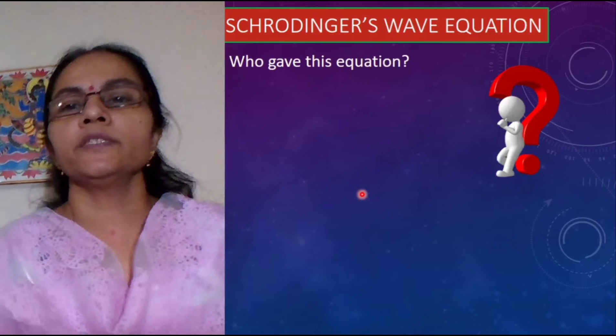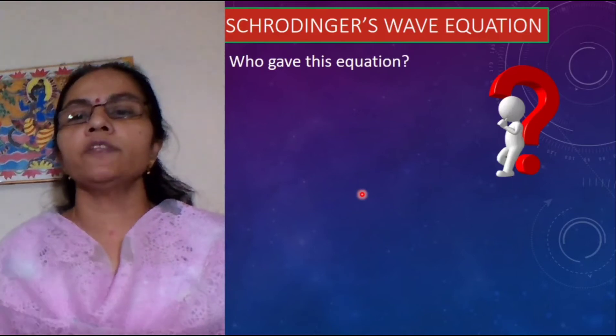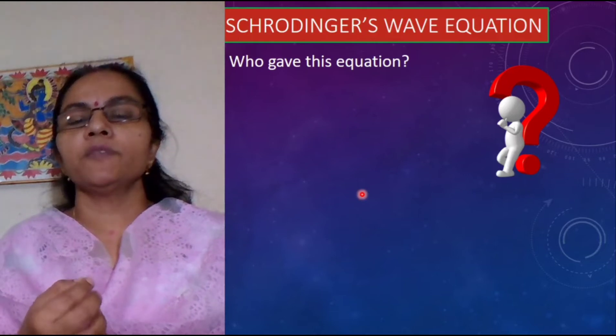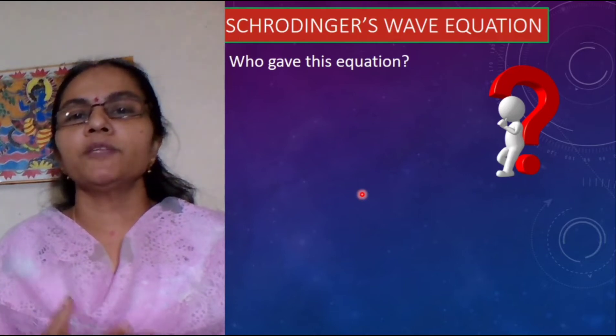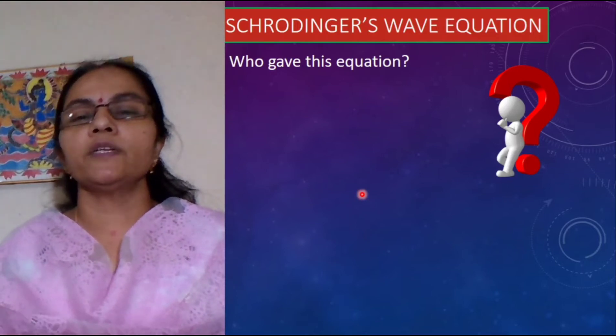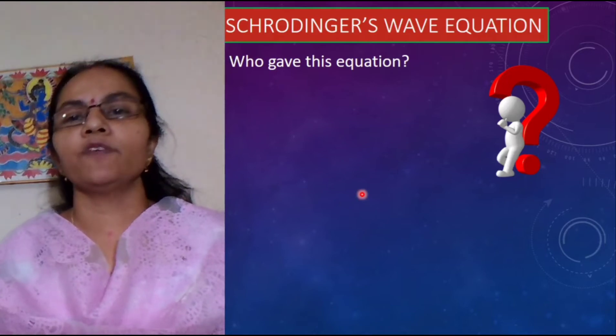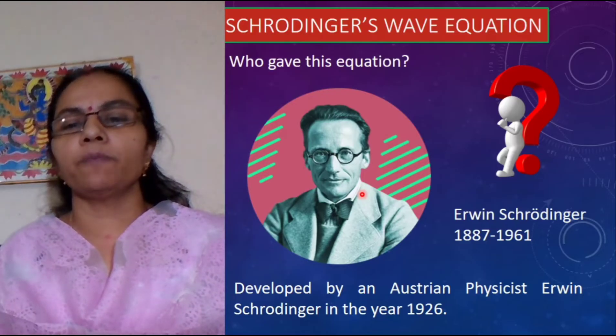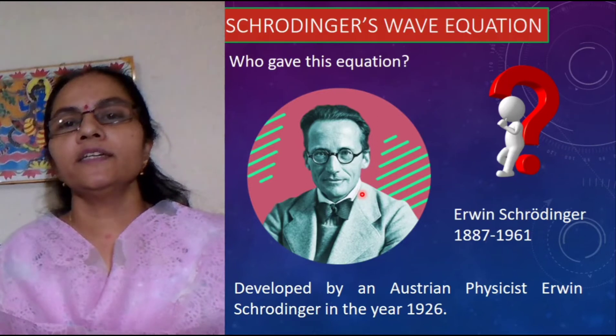What is this Schrodinger wave equation? Who gave this equation? Before we are going to study something, generally we develop the curiosity that who gave this equation? What is the significance? So let me tell you who gave this equation and what is the significance of this equation. This equation was given by an Austrian physicist Erwin Schrodinger in the year 1926.